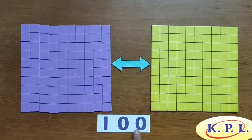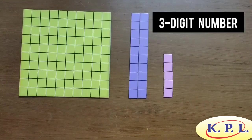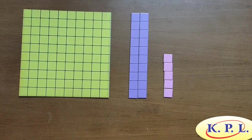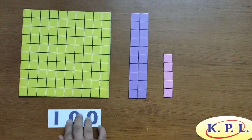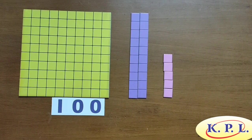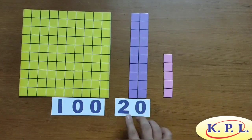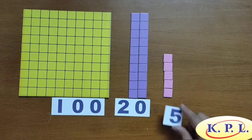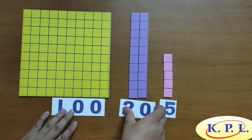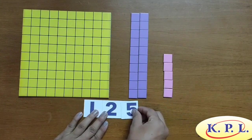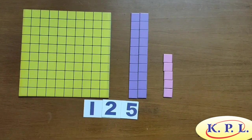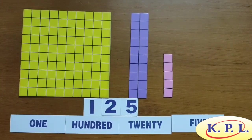Observe that 100 is the smallest 3-digit number. Now we move to 3-digit numbers. Let us count these units and build the number. There is one board of 100 units, i.e. 100 units, 2 strips of 10 units, i.e. 20 units, and 5 ones units, i.e. 5 units. 100 plus 20 plus 5 is 125. In words, it is represented as 125.